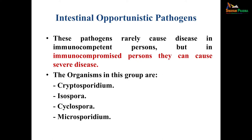All these are mainly intestinal opportunistic pathogens — that is, they rarely cause disease in immunocompetent persons, but in immunocompromised people they can cause severe disease. The organisms in this group which are important are Cryptosporidium, Isospora, Cyclospora, and Microsporidium.